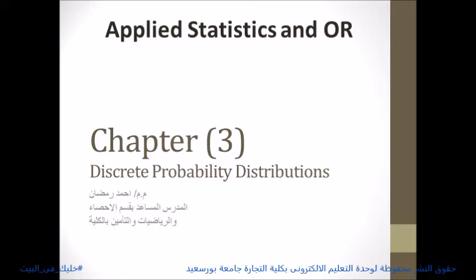What is a continuous random variable? A continuous random variable may assume any numerical value in an interval or collection of intervals. It takes values within intervals, based on measurement scales such as time, weight, distance, temperature, and price — all of which take values within intervals.